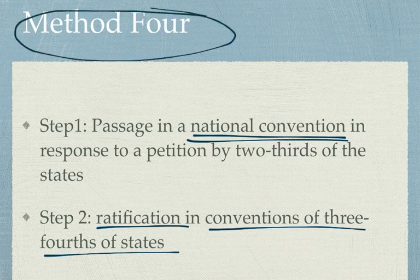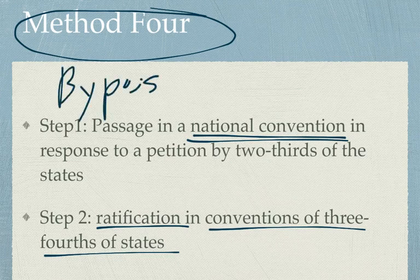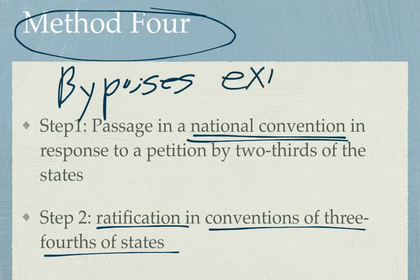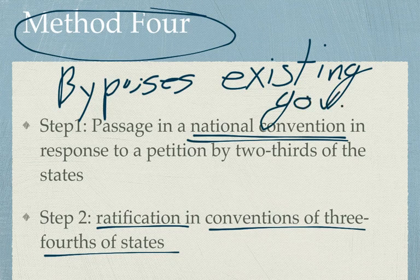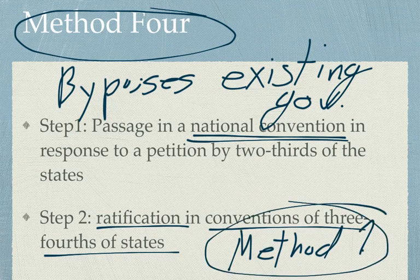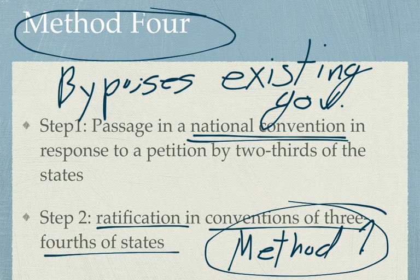Method four is also a national convention for the proposal, just like method three, only this time ratification goes to conventions in three-fourths of the states — like method two. Method four is unique because it completely bypasses existing government. The only method that has actually ever been used is method one — all of the constitutional amendments we have today have gone through method one. Next time, we'll be starting the next section where we'll go through each of the major institutions in American government.